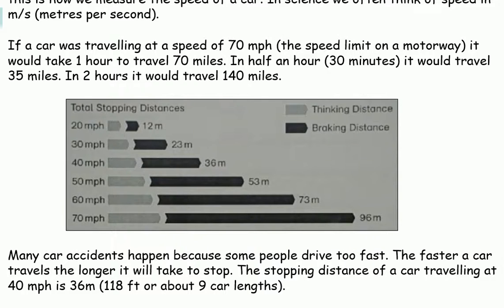Many car accidents happen because some people drive too fast. The faster a car travels, the longer it will take to stop. The stopping distance of a car travelling at 40 miles an hour is 36 metres, 118 feet, or about nine car lengths.